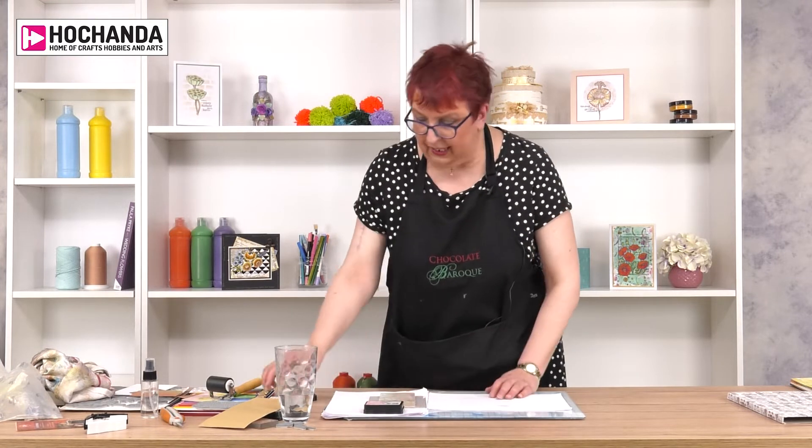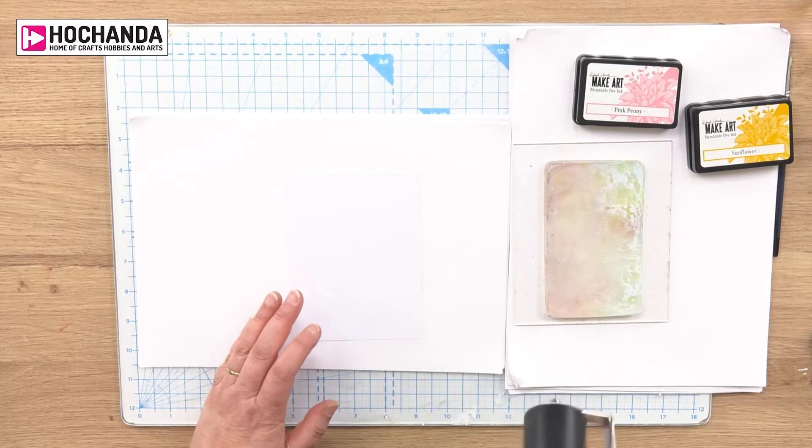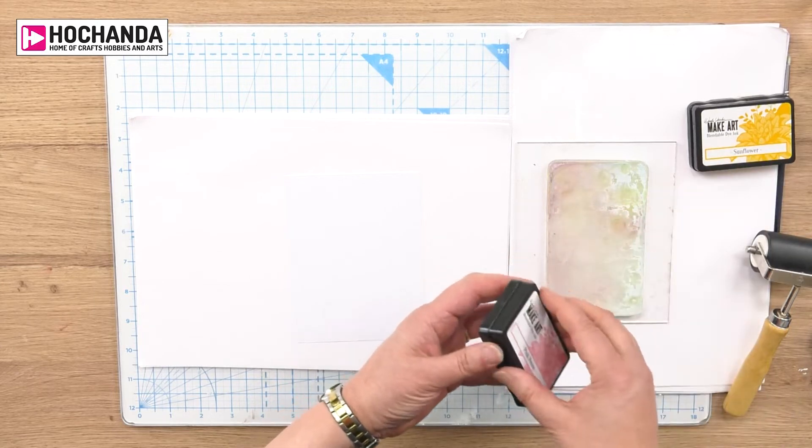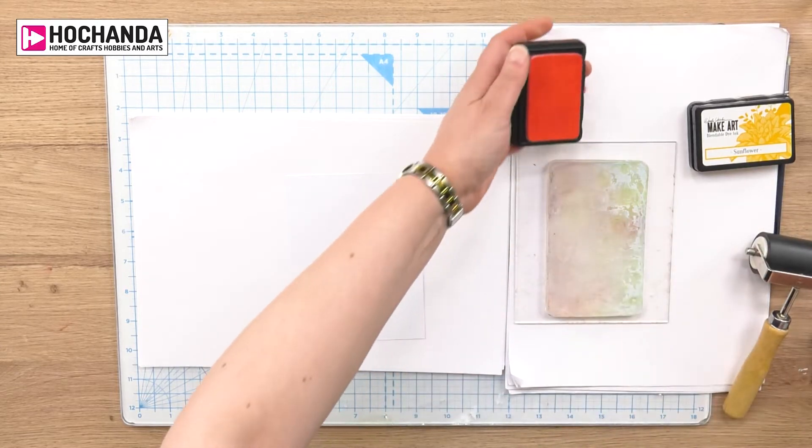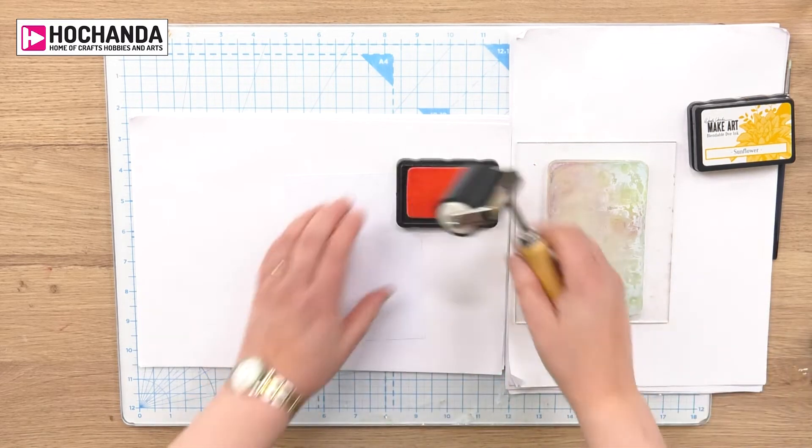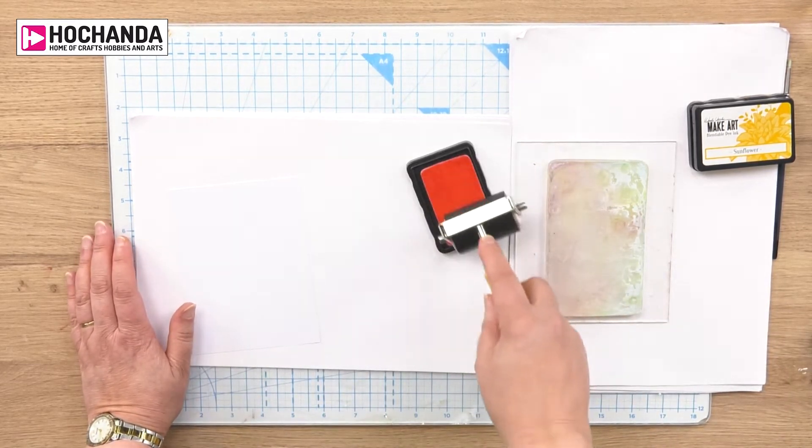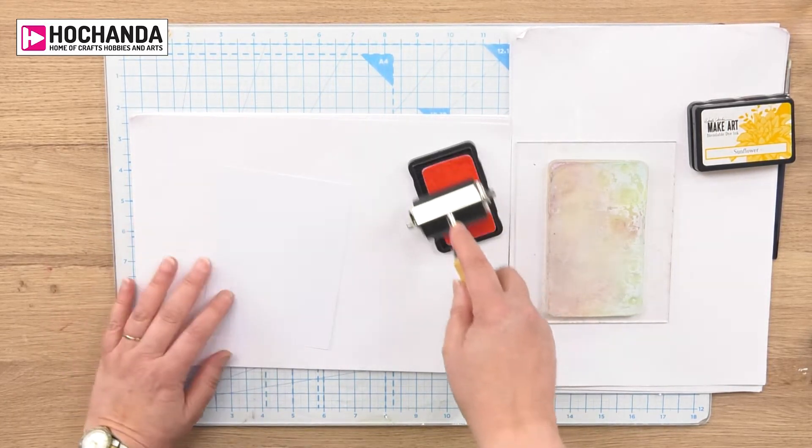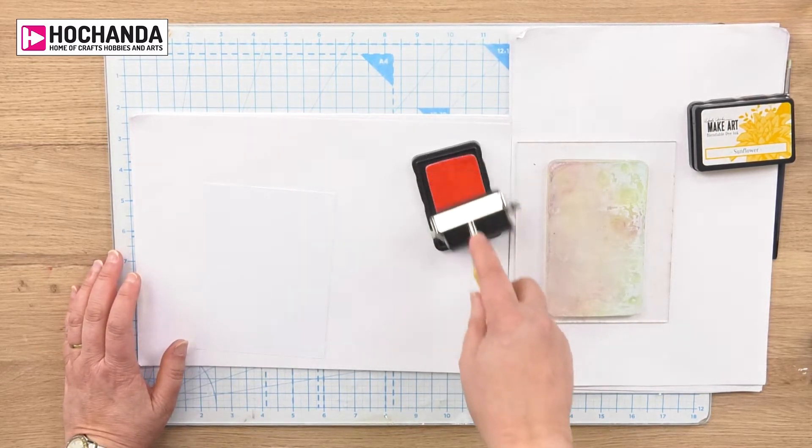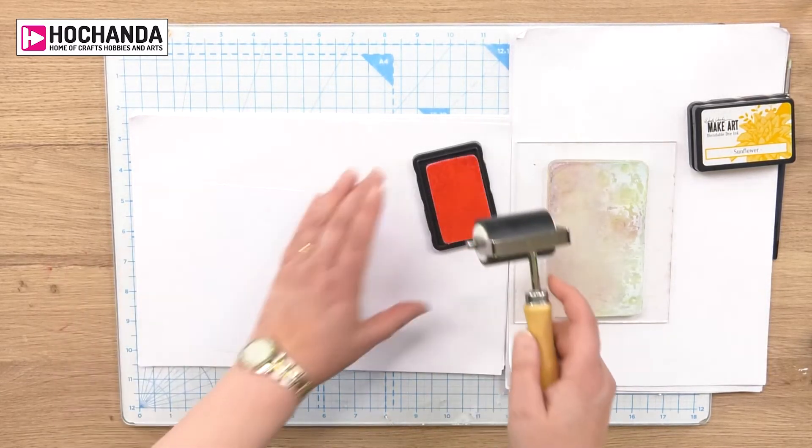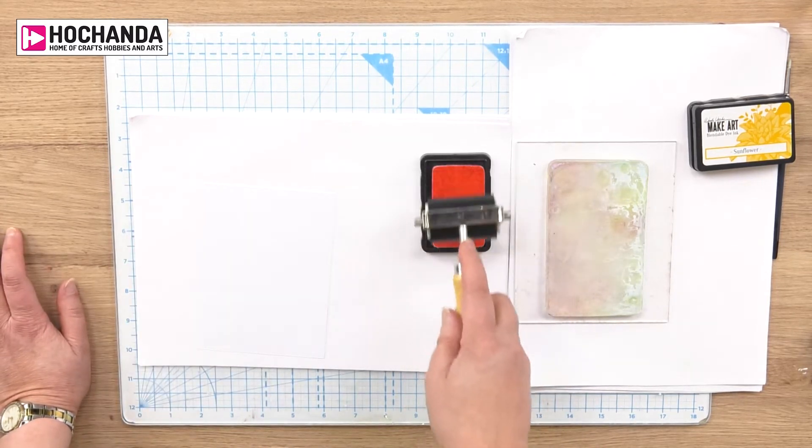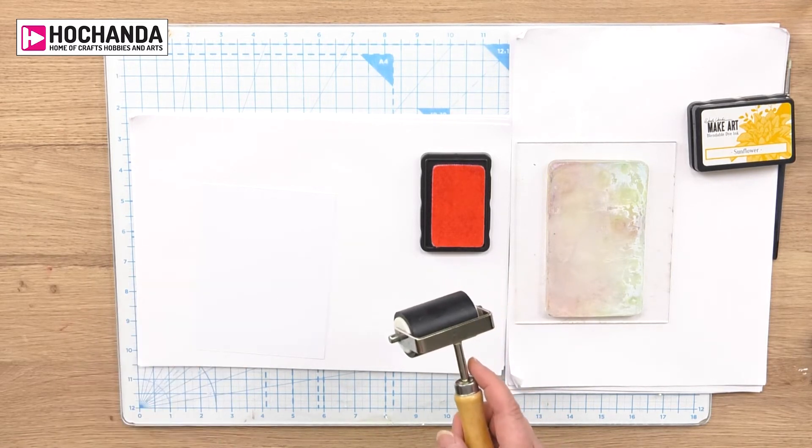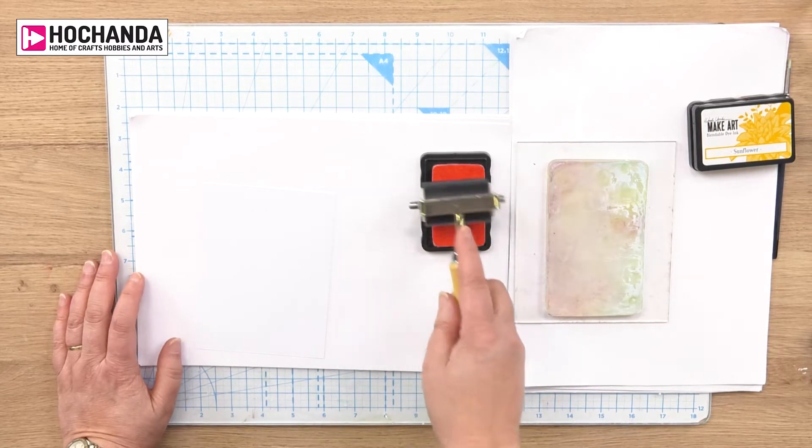Today I'm using the Make Art inks and roller from the craft along box. I've taken pink peony which is a very pale shade, but you can build up color, and a sunflower. Cover your brayer or roller, and this is so handy because the size fits neatly with the little jelly plate. If you've not used a jelly plate before, it helps you use paints and inks to create backgrounds and you always pull a one-off print.